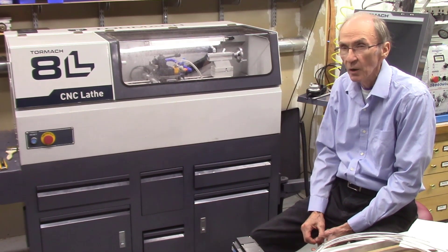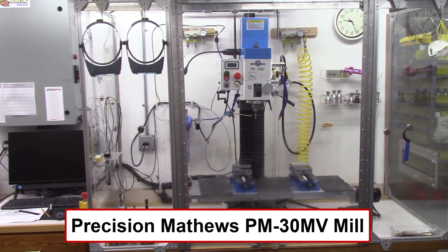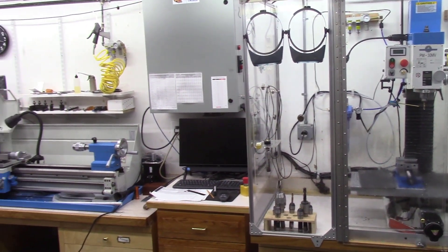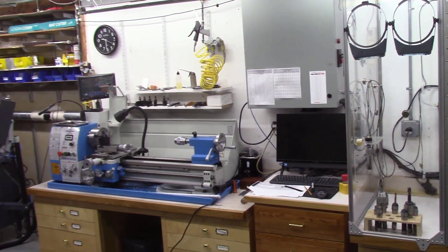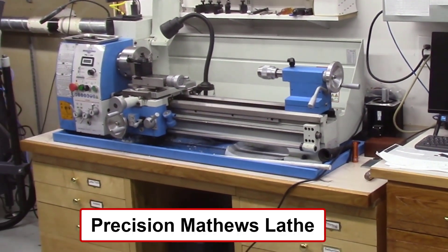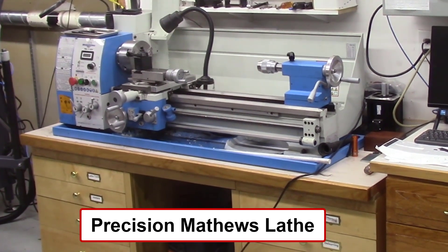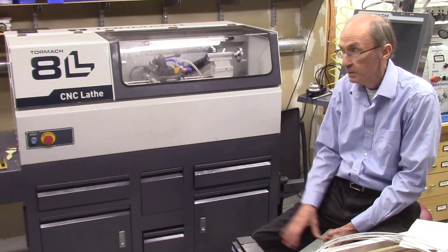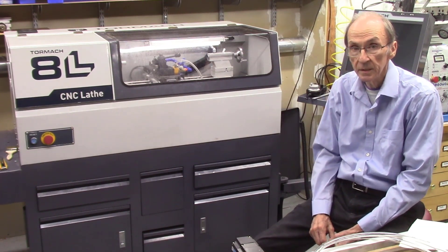Originally, about a year ago, I bought a Precision Matthews lathe and a Precision Matthews mill. I did convert the mill to CNC operation, and the initial plan was to convert the lathe for CNC operation also. But based on the design of the system, it was a little more difficult to do, so I decided to buy this Tormac 8L lathe in its place.